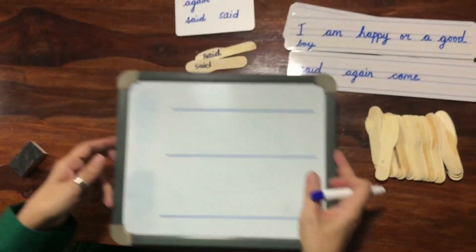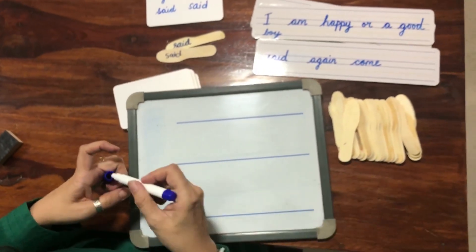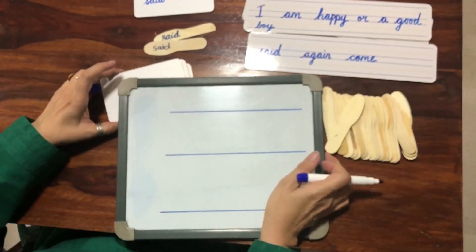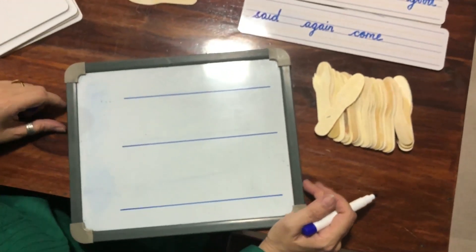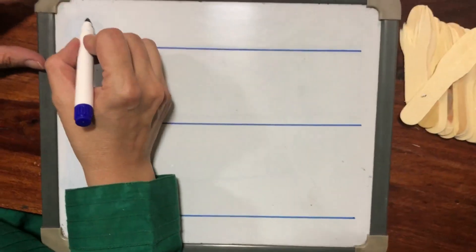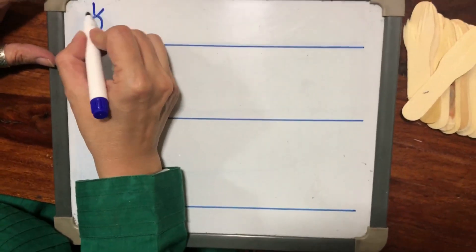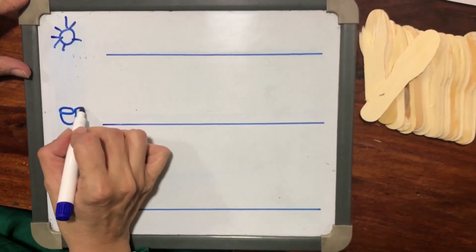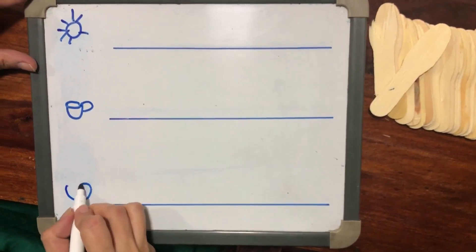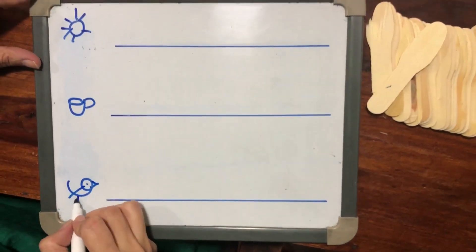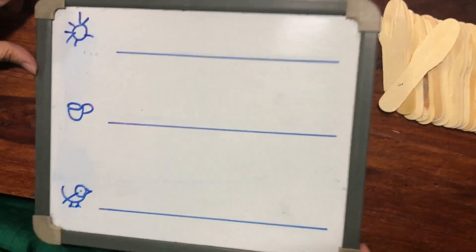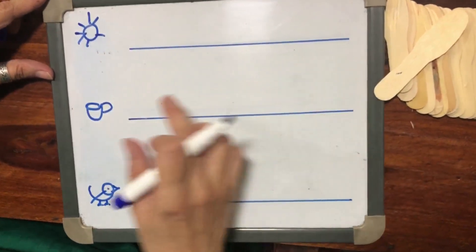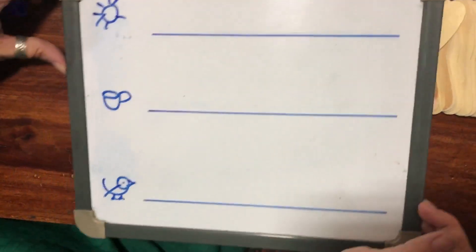Now this is a board that I would use for picture comprehension. We draw pictures. For example, I draw a sun. I draw a cup. And I'm going to draw a bird. And I can give, you draw the lines first. I can give this and ask the child to make a sentence.